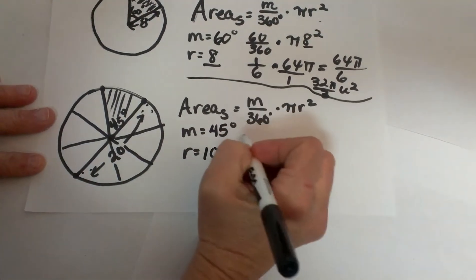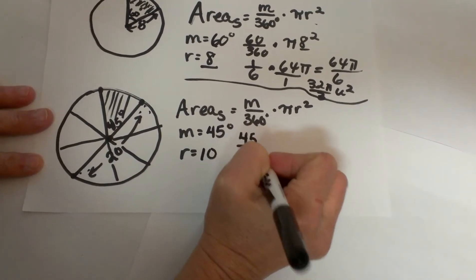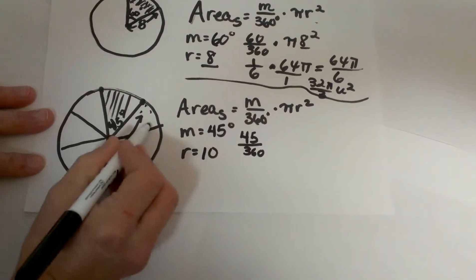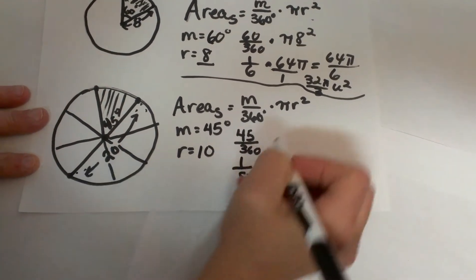So now I can plug everything in so the measure is 45 over 360 and I am going to reduce that. Well how many slices do I have? I have 8 slices so that is actually 1/8 of my circle.